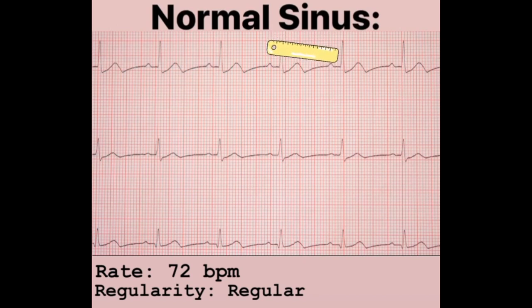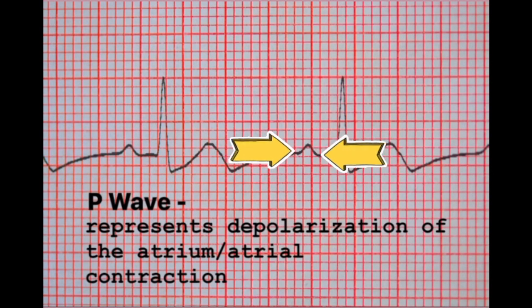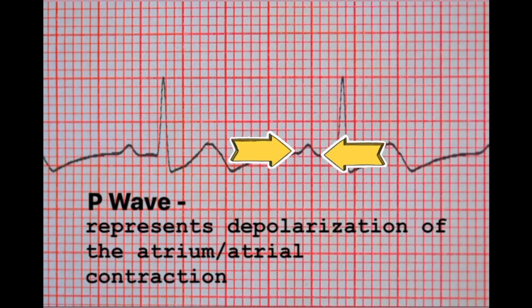The next thing we need to check is our P waves. Our P waves — upright and present. They appear to be on this EKG strip. Taking a closer look, you can see that the P wave is there — it is present and it is upright. The P wave represents the depolarization of the atrium, or the atrial contraction. The atrium is on top of the ventricles and is smaller than the ventricles. So when you're looking at the P wave on the EKG strip, it's going to be a smaller wave in comparison to the ventricles contracting.